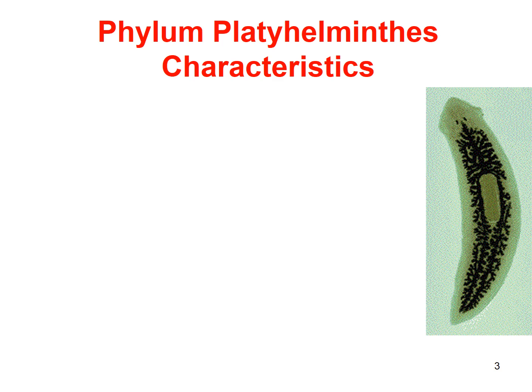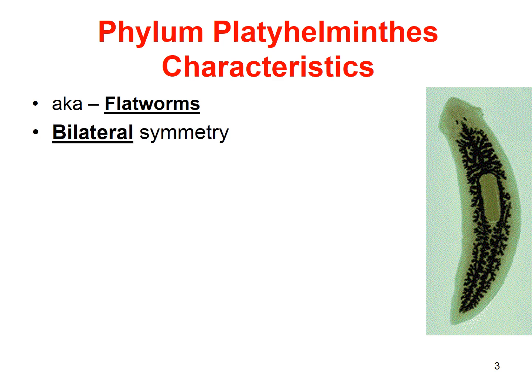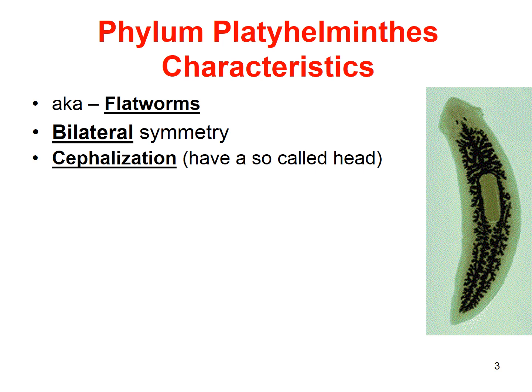Here are some characteristics of Phylum Platyhelminthes. The picture on the right is a planarian — you'll actually be doing a lab on these guys. This is one of the non-parasitic worms in this phylum. Their common name is flatworms. They all have bilateral symmetry, meaning they do have a head end, so you can divide them in half down one way. They have cephalization, meaning they have a head area with a concentration of sense organs.